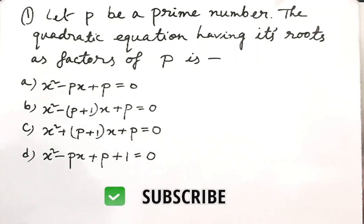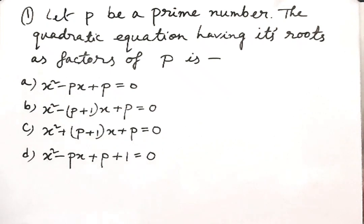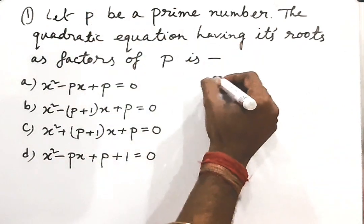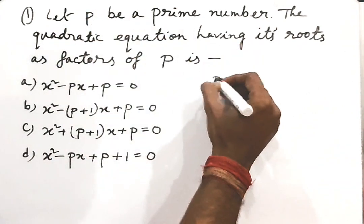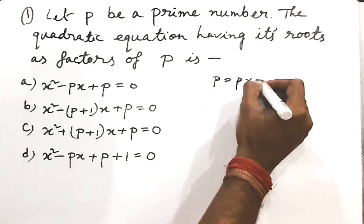The question is: let P be a prime number. The quadratic equation having its roots as factors of P is. We know that the factors of P are P and 1, since P equals P times 1.